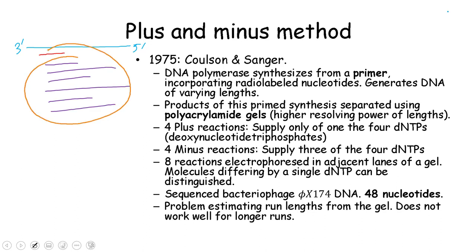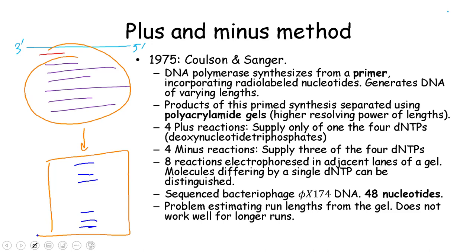They then separated these fragments using polyacrylamide gels, which have better resolution than 2D electrophoresis. By separating these fragments, they produced longer primer sequences that could be used as starting points for further synthesis. Using these fragments, they performed eight parallel synthesis reactions — in four plus reactions they only used one type of nucleotide, and in four minus reactions they left out each nucleotide using the remaining three. After letting the synthesis reaction take place, they compared the results of plus and minus reactions to see which nucleotide was incorporated. They repeated this for each fragment and identified the order of 48 nucleotides from a bacteriophage DNA.